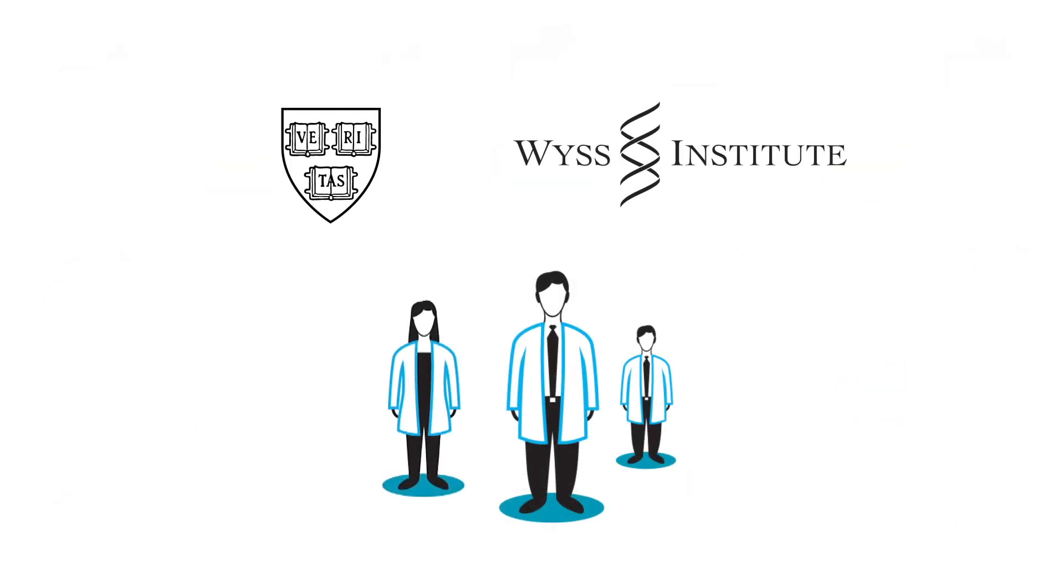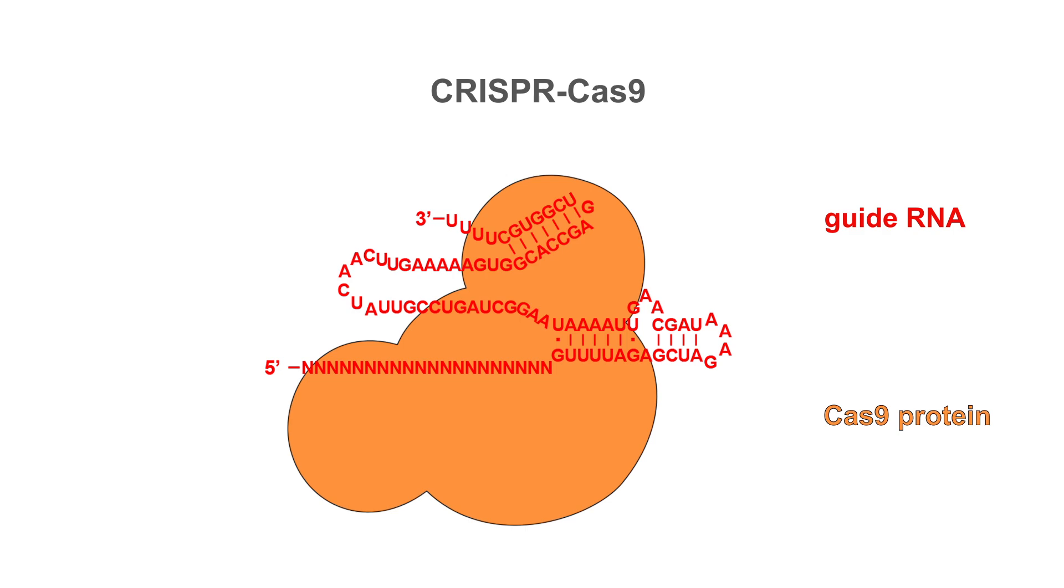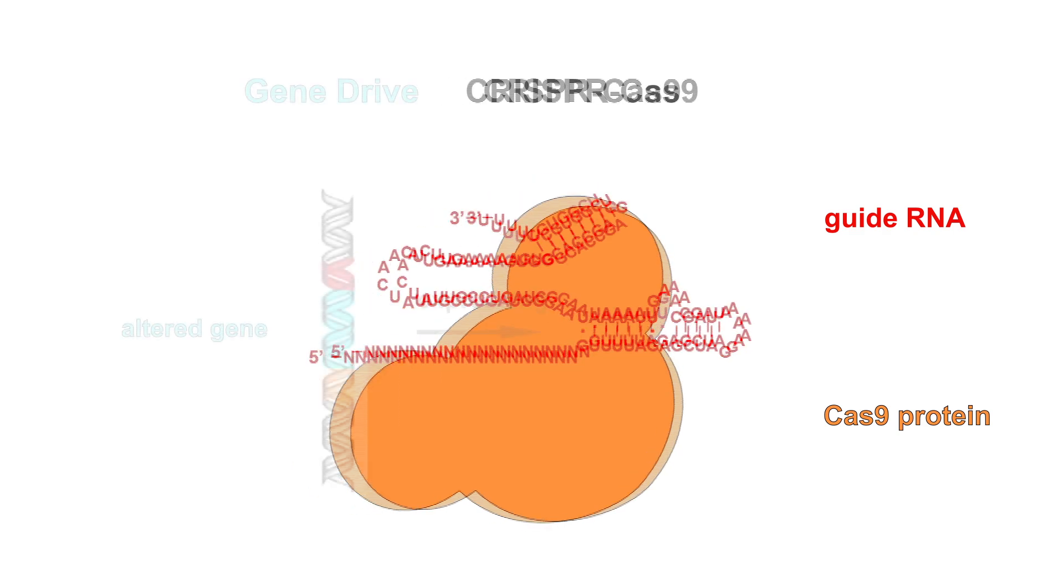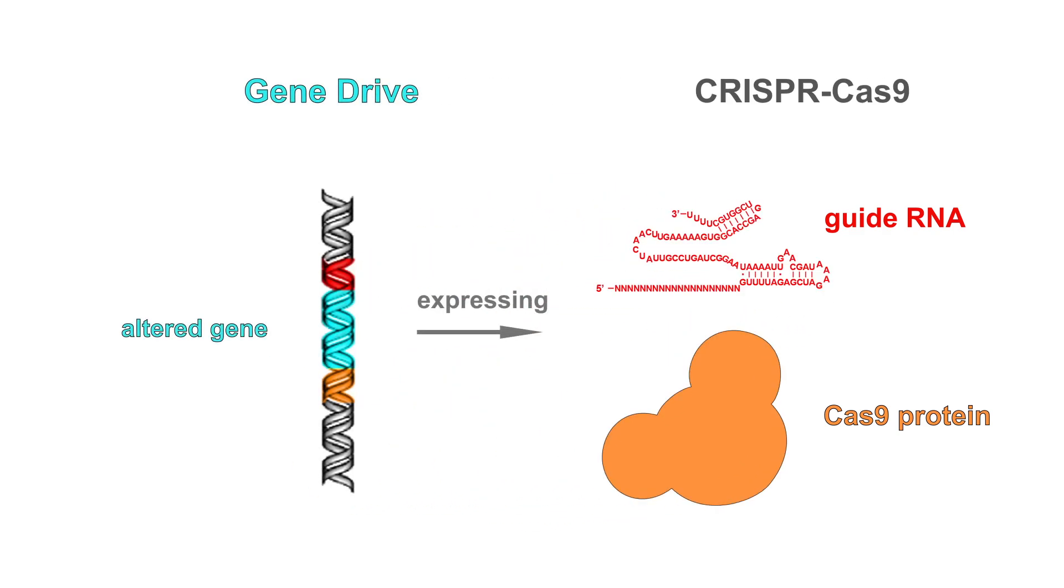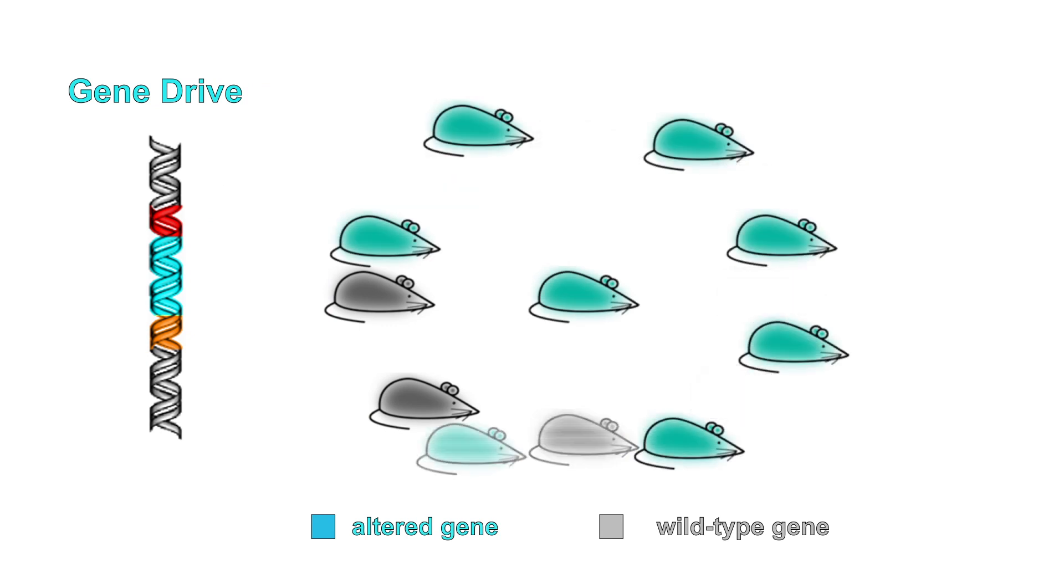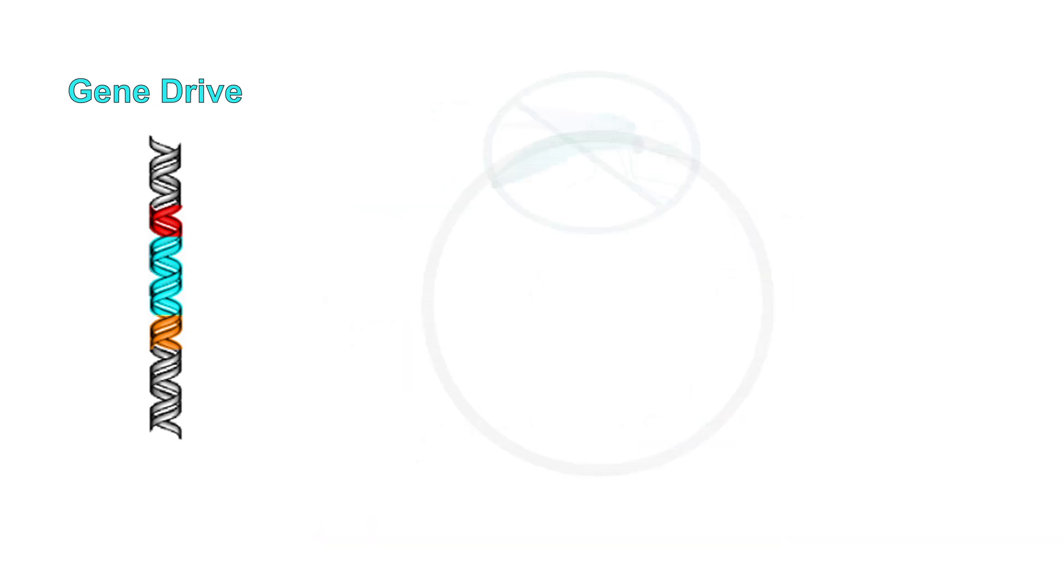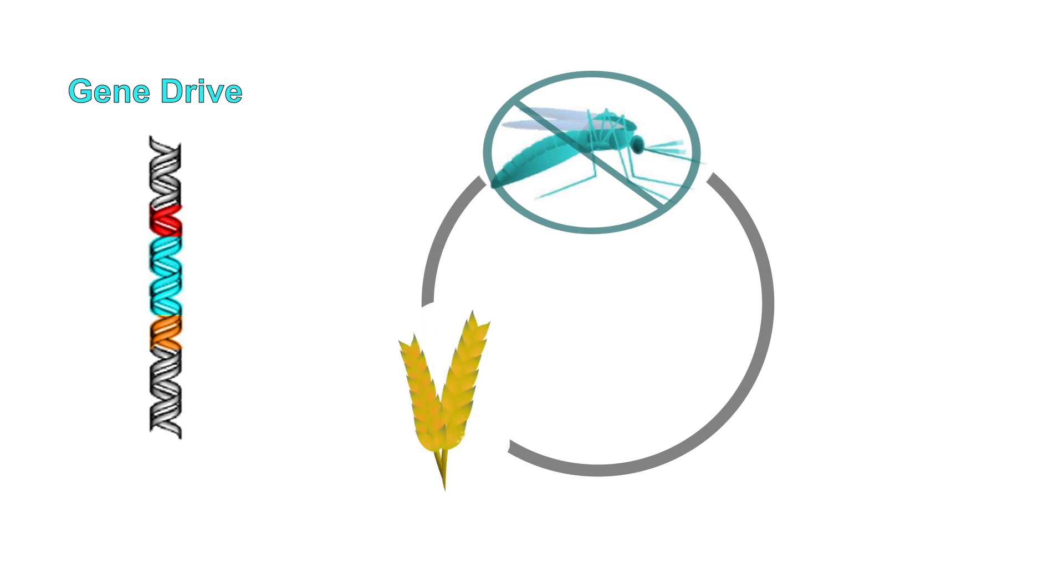Scientists at Harvard's Wyss Institute have shown how the CRISPR-Cas9 gene editing system can be used to build a gene drive capable of spreading particular alterations in the wild. This technology could be used to eradicate insect-borne diseases, empower sustainable agriculture, and promote ecological conservation.